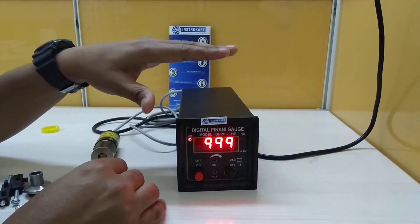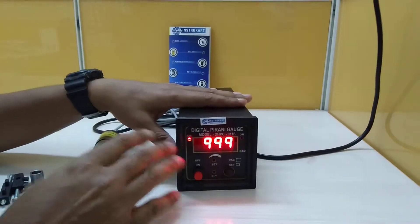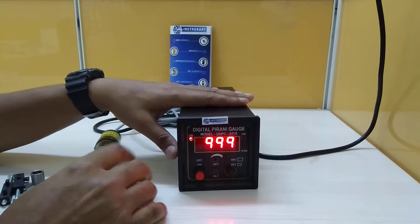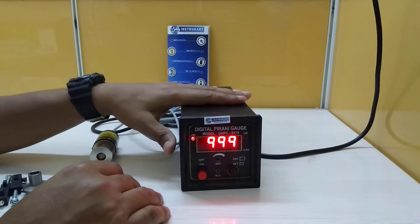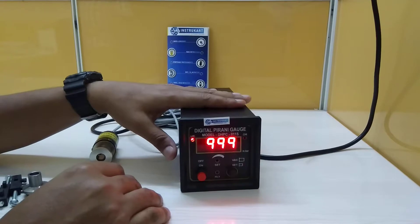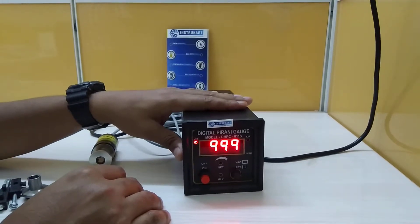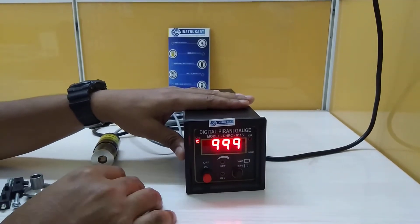And another Pirani gauge with a normal indication. So typically we are having three models of this, one with normal indication, the second is this one with the setpoint controller and the third one which is with the dual head gauge.